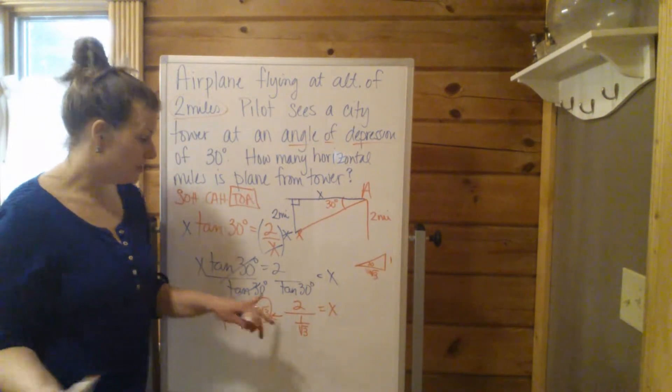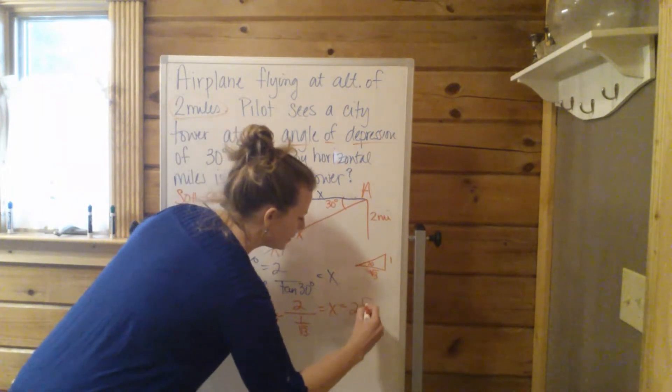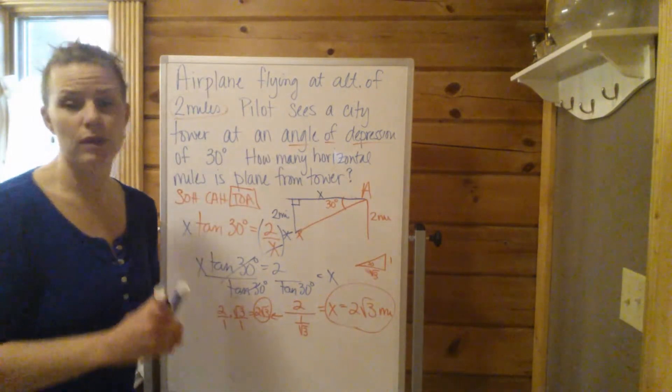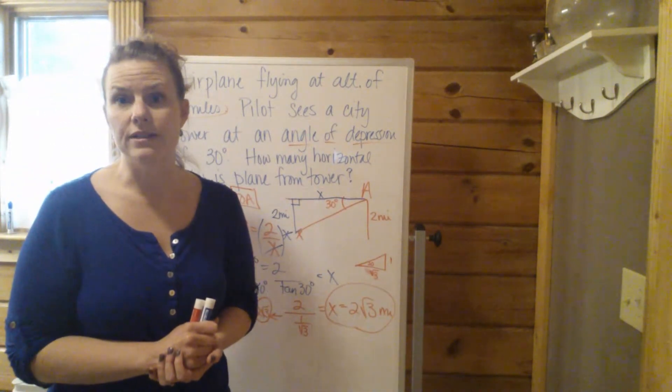That's your answer. 2 square root of 3 miles in this case. So 2 square root of 3 miles. I'm guessing they might want a decimal approximation for this one. Just punch it in your calculator. And that's going to be your answer.